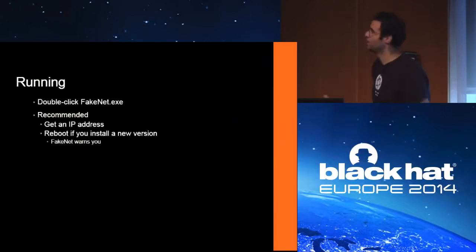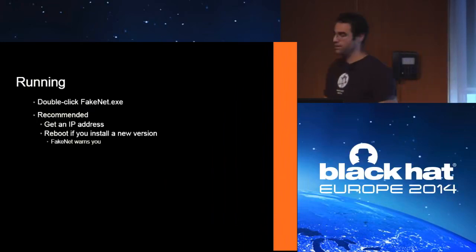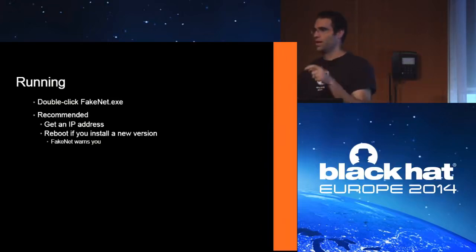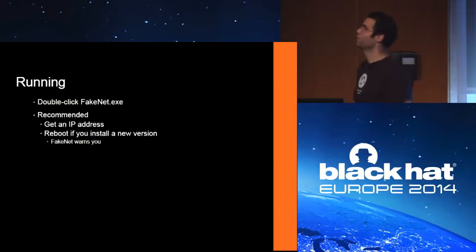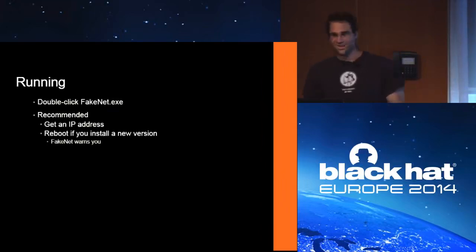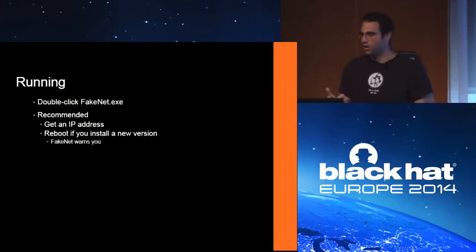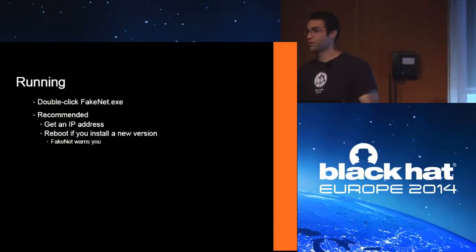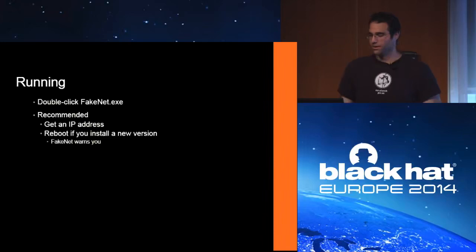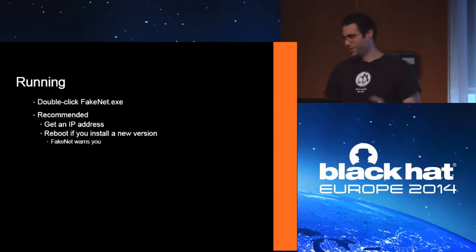For running: you just double-click on it. A couple of things worth mentioning — you need to have network connectivity of some sort. If Windows detects that the physical network isn't connected, you actually can't use WinSock at all. Every time you install a new version, you have to reboot. Usually in the VM we run it in host-only mode, so it only talks to the host. You don't have to allow any traffic or give it a real IP address, but it just has to be in a connected state.